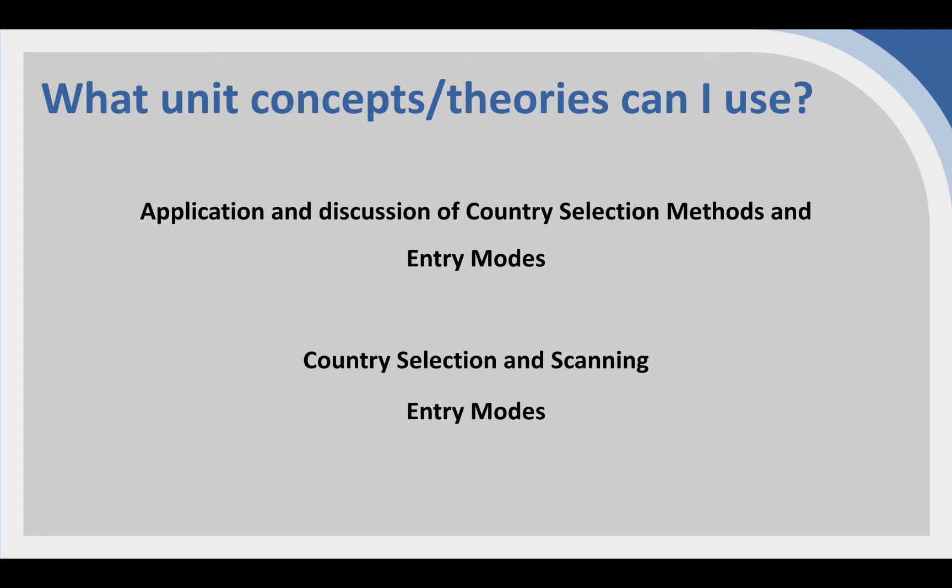You will find lecture slides on all of these. You don't want to use all three because they aren't complementary — they are alternative ways of identifying new markets. So you'll want to use one of them as opposed to all three. Choose one that makes sense. If your company has been using Uppsala for the last 20 years, you probably want to continue with Uppsala. Alternatively, you can use OLI or scanning. Choose one that makes sense for your organisation.